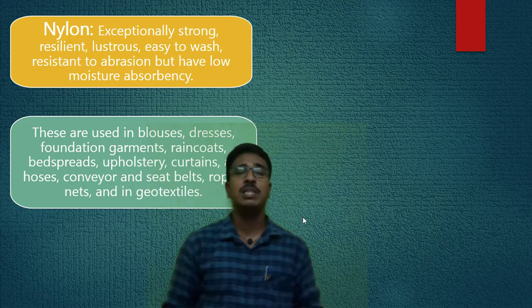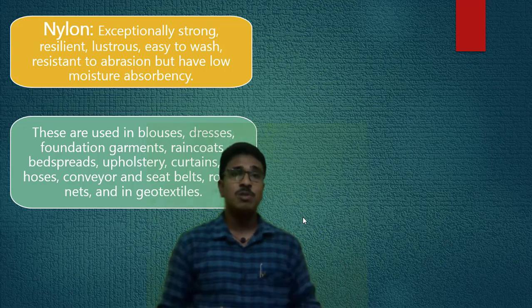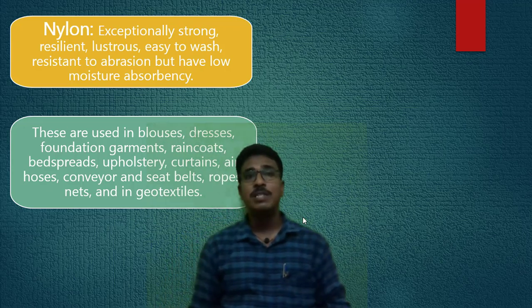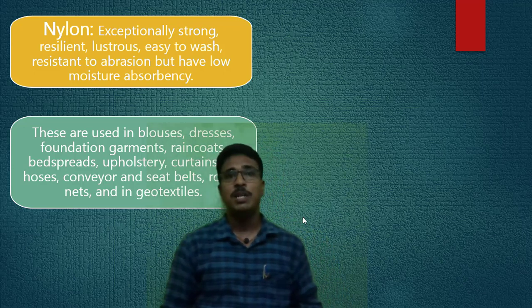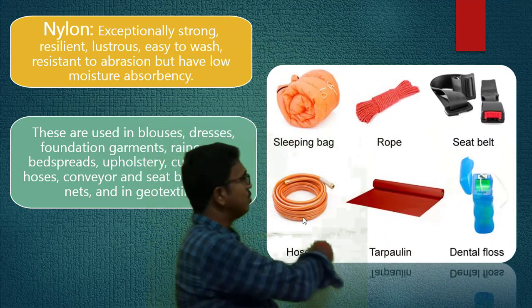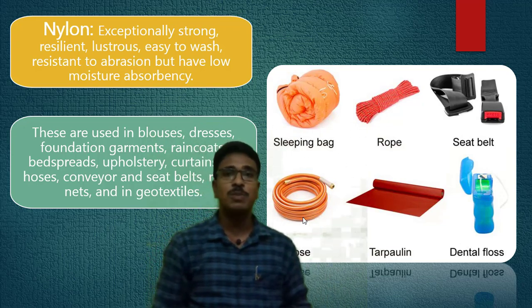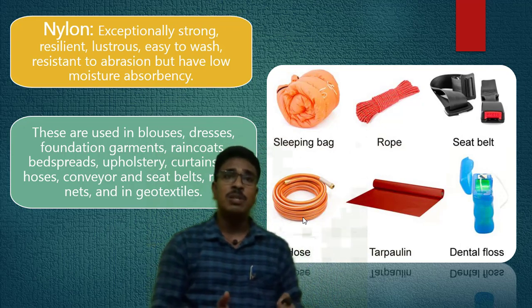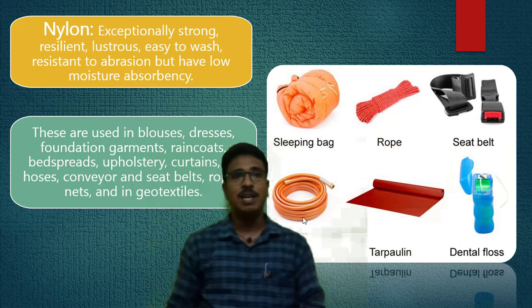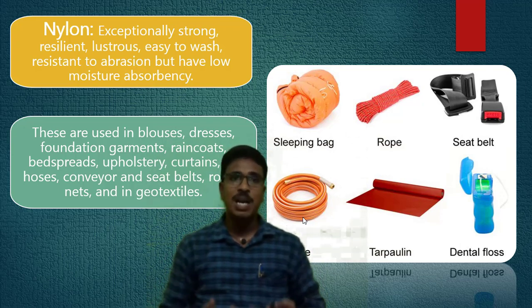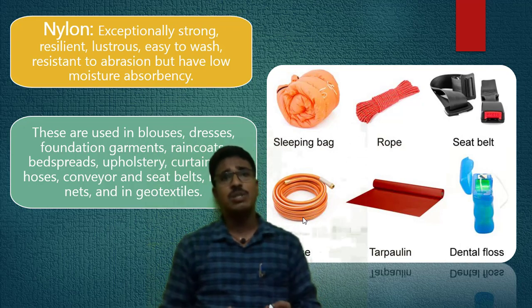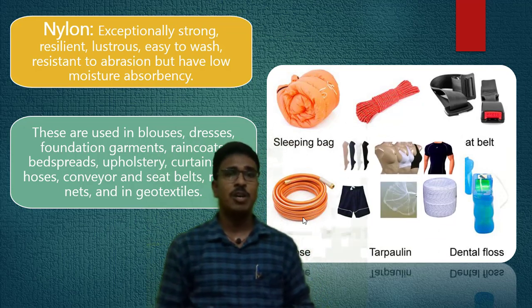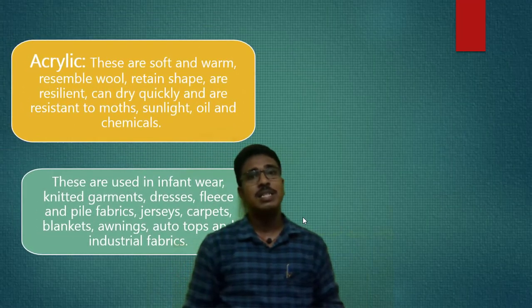Nylon is the second most widely used synthetic fiber. It is used widely because of its exceptional strength, resilience, lustrous appearance, ease of washing, and resistance to abrasion, though it has low moisture absorbency. Based on these properties, nylon is used in sleeping bags, ropes, seat belts, conveyor belts, hose pipes, tarpaulin cloths, and dental floss. Whatever properties a fiber possesses determine its end-use applications.